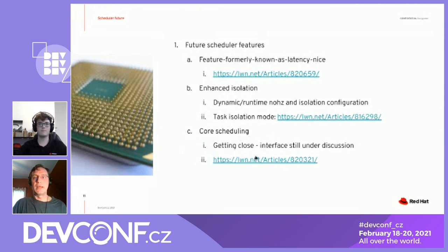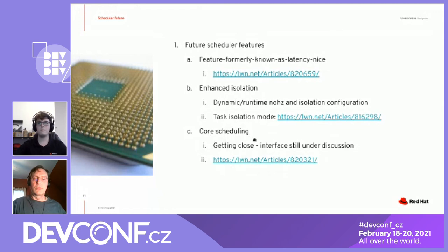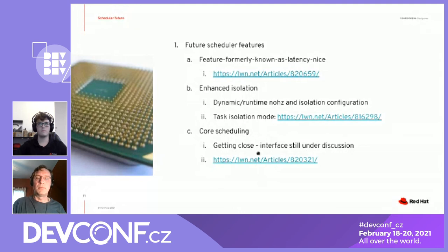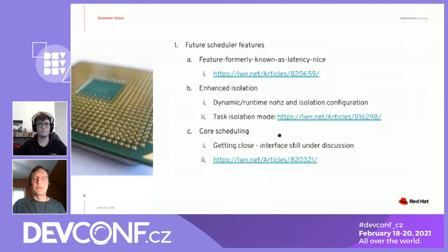Core scheduling is another interesting feature worth mentioning. This is a way to have the scheduler enforce that only tasks that trust each other will run on the sibling threads of a hyper-threaded core at the same time. It's originally a security feature — there are some other pieces needed to make it fully work as a security feature — but there's definitely interest in it and it's getting close to being merged. I'm not sure when exactly; I believe it's in Peter Zijlstra's queue, so maybe 5.12 or 5.13.